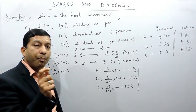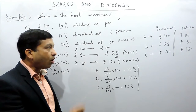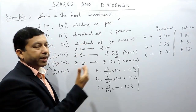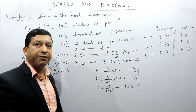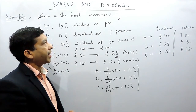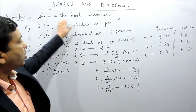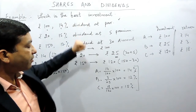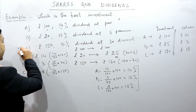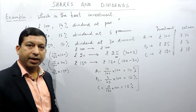We must look at the percentage of return, not the amount received, because the investments are different. Percentage is the most important criteria for comparing investments. So the best investment is C, with a 15% return rate. Thank you.